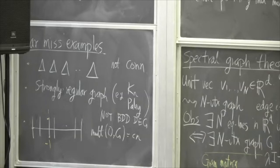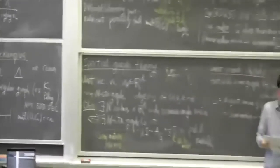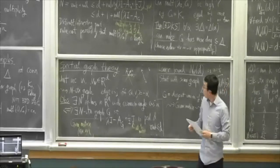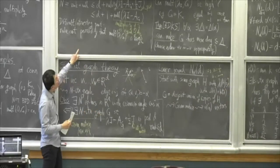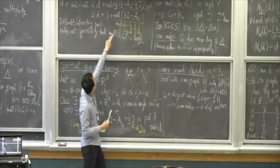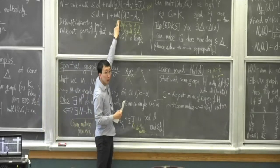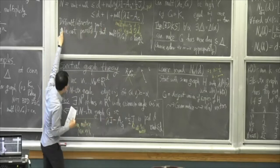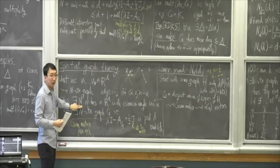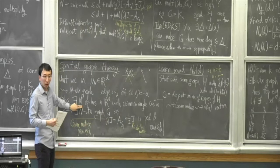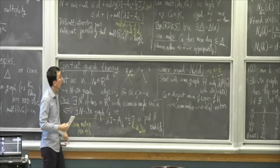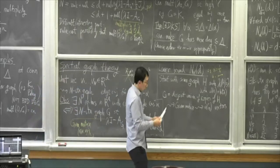To answer the question of how this fits together: once you have an upper bound on the second eigenvalue multiplicity, that goes into an upper bound via rank-nullity, which upper bounds N, and N is the number of equiangular lines.